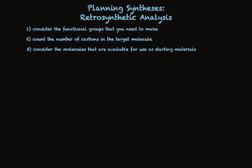Step three: consider the molecules available to you as starting materials in your synthesis. For this course, you'll usually be given a very restricted set of starting materials. Look at those materials and see how big they are, then look at the target molecule and see how big it is. That will tell you whether you need to make a carbon-carbon bond or whether you can start with a molecule that already has all the carbons you need.